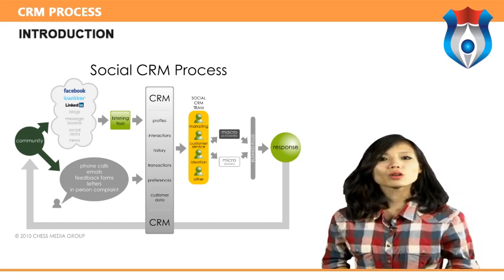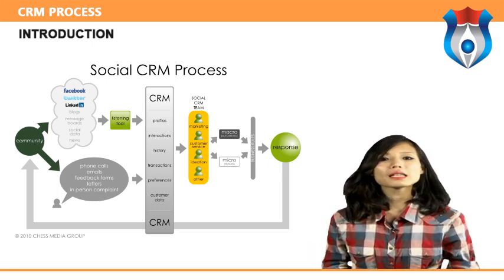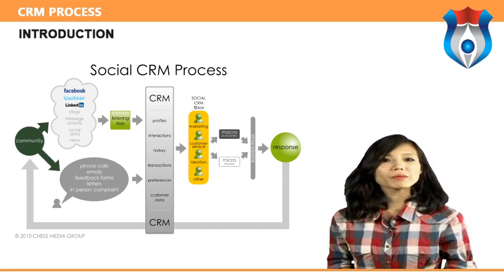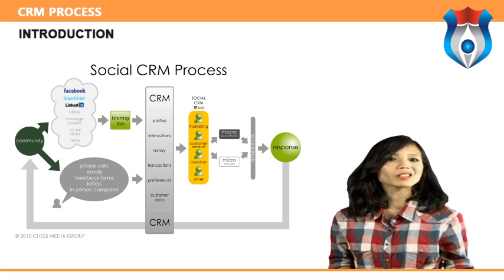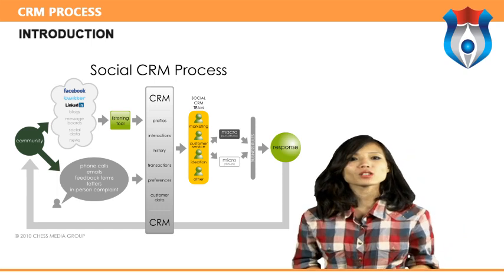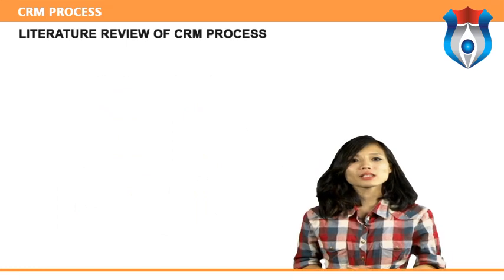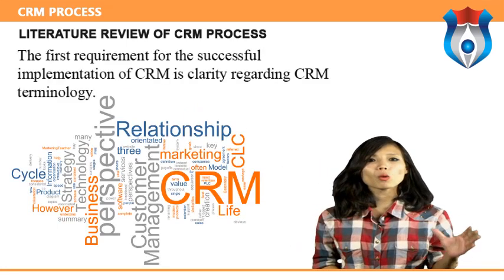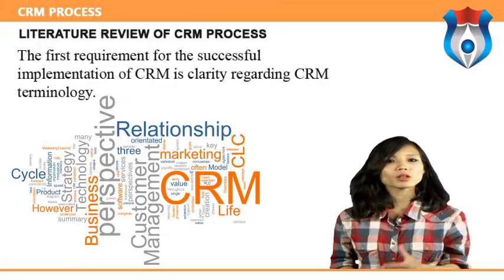According to a Gartner survey, 65% of US companies intended to initiate CRM projects in 2002. In Europe, roughly 3% of companies had fully implemented a CRM project in 2001, 17% had initiated more than one local project, and 35% were developing concepts for the introduction of CRM. The first requirement for the successful implementation of CRM is clarity regarding CRM terminology.